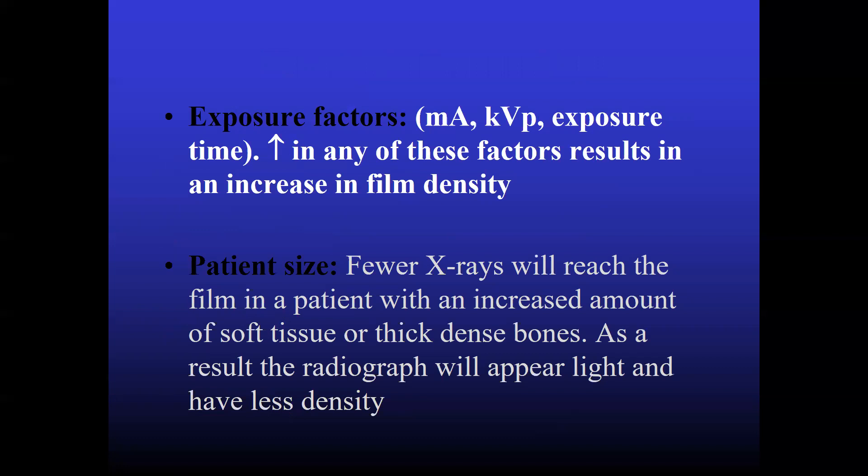Patient size. Fewer x-rays will reach the film in a patient with an increased amount of soft tissue or dense bone. So as a result, the radiographs will appear light and have less density. That is, you need more x-rays to pass through the soft tissue to reach the film. So if the KVP is of the normal range, the image will have less density in the radiographs. But if you increase the exposure factor, the x-rays will go much more deeper. I mean it will penetrate more into the soft tissue and you will get a much better image. That is, more denser.